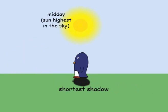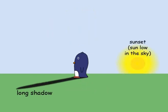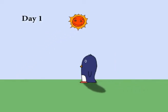At midday, when the sun appears highest in the sky, the shadow is shortest. And at sunset, when the sun appears low in the sky, once again the shadow is long.